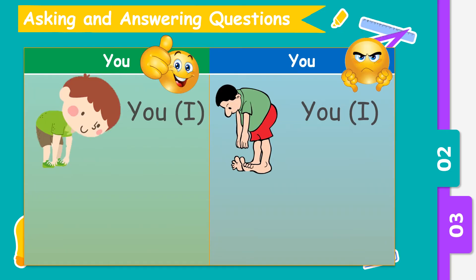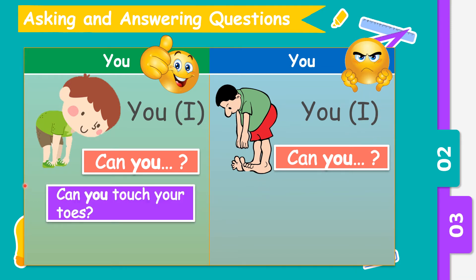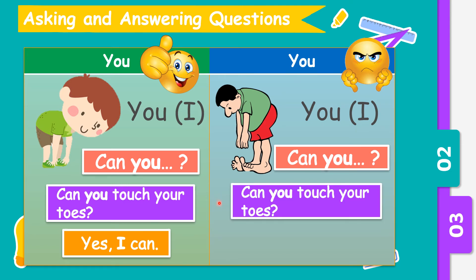Now, when you want to ask questions about yourself, we use 'Can you'. Your answer should use 'I'. For example, can you touch your toes? If you can touch your toes, your answer is yes, I can. But if you can't, you say no, I can't.